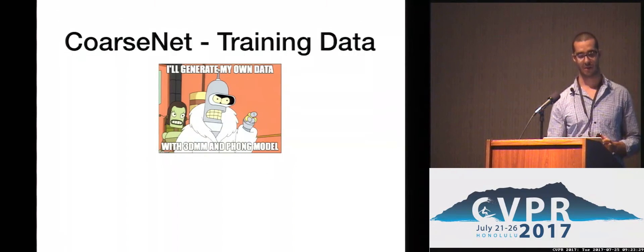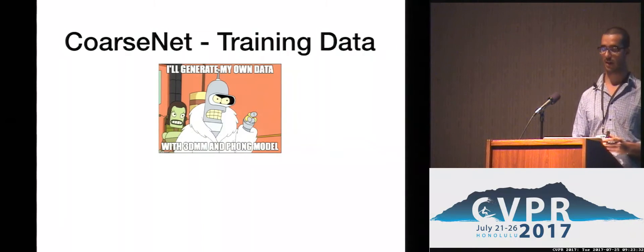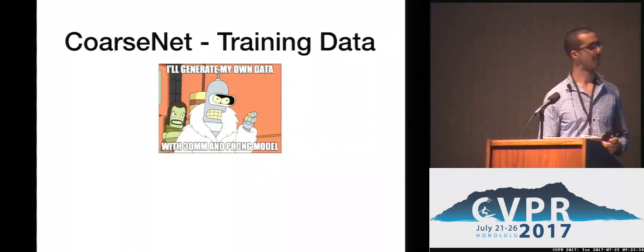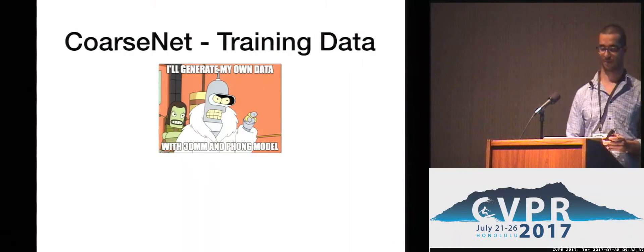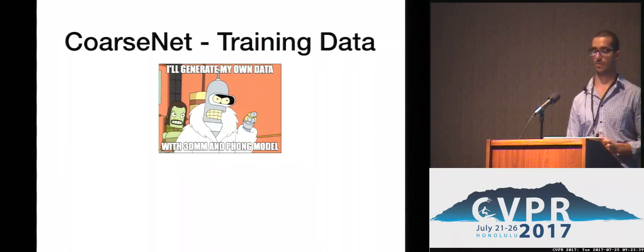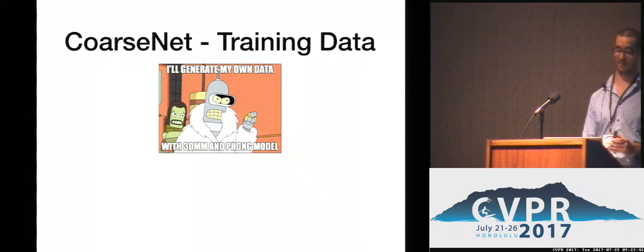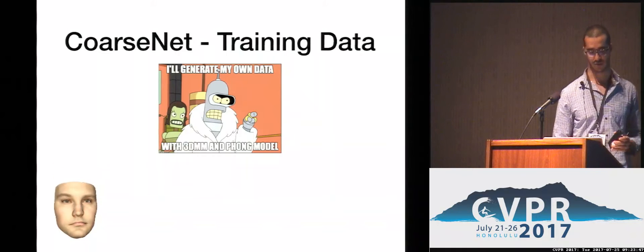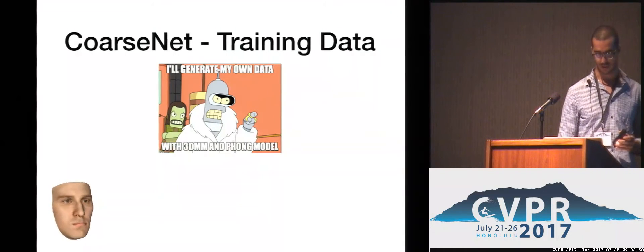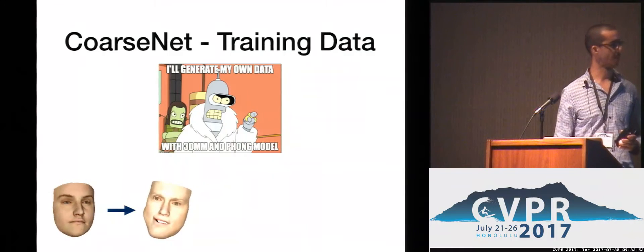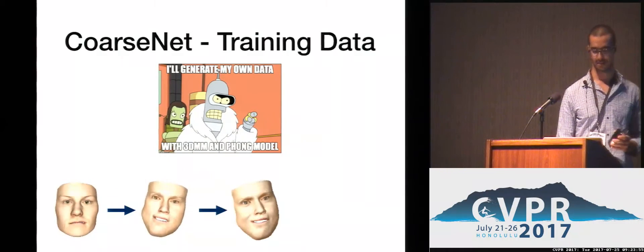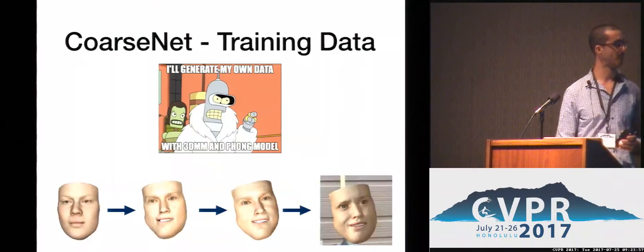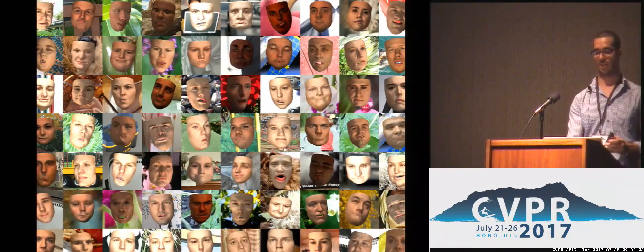To train a convolutional neural network, we need a large amount of 3D faces. Such a dataset does not currently exist. Instead, we proposed to generate synthetic facial images. We randomly drew facial shapes and textures from our model, set random poses, lighting conditions, and backgrounds, and created a large dataset of synthetic facial images for which the geometric structure is known.